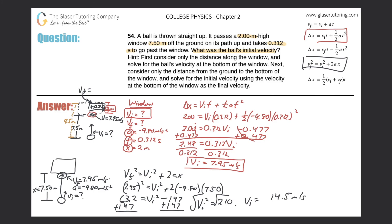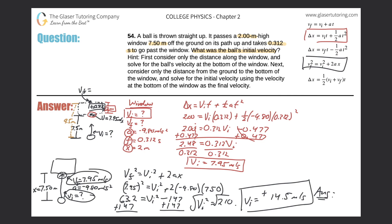We take the positive root since the ball is traveling upward, so the initial velocity is positive 14.5 meters per second. This is the final answer — the initial velocity imparted to the ball. It makes sense that this is greater than the 7.95 m/s velocity at the window. Thanks for watching, hope it helped, and please remember to subscribe.